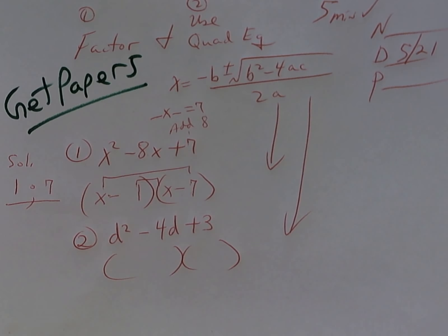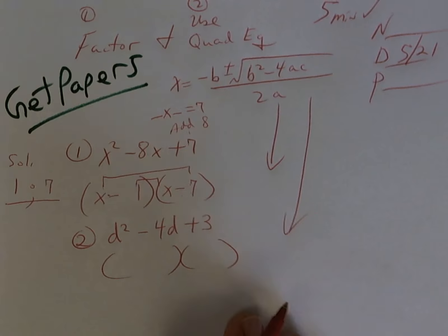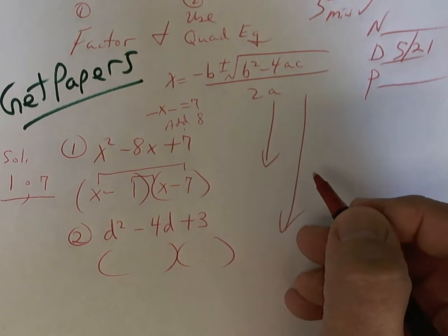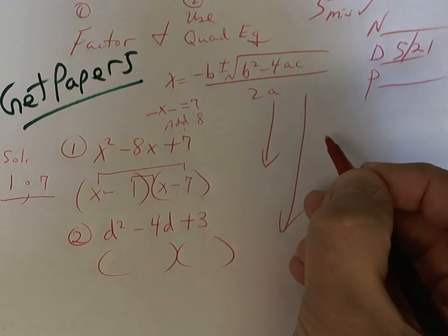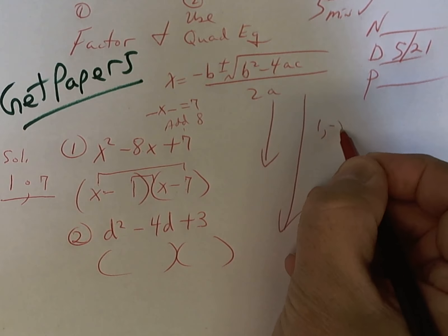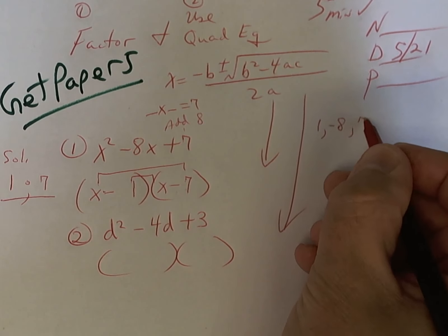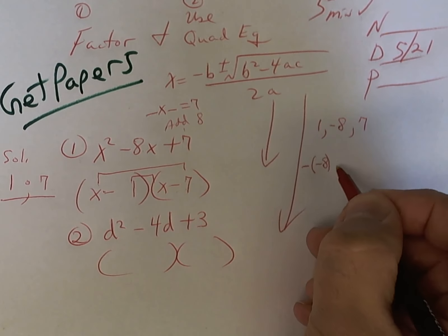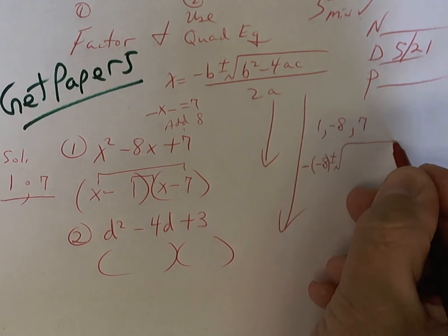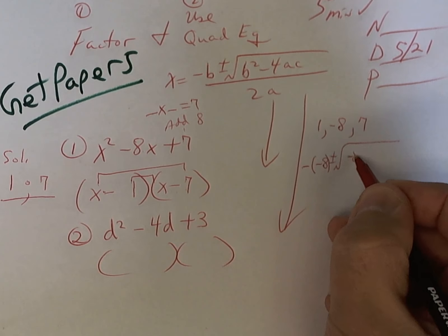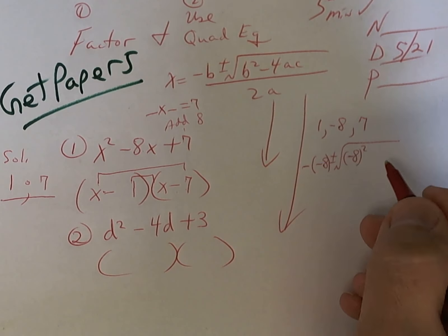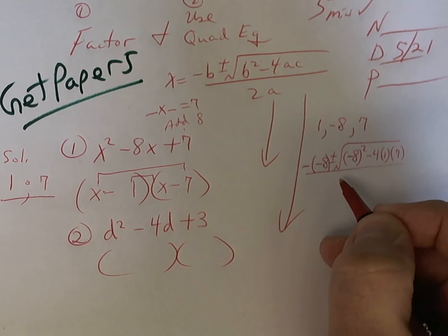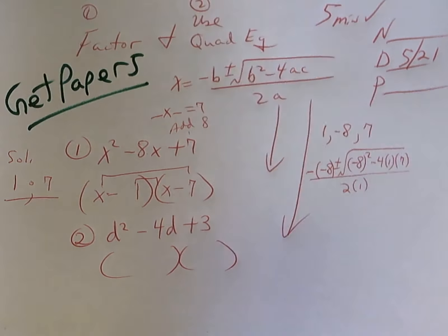Now, the quadratic equation looks like this, a, b, and c. So it's negative b plus or minus the square root of b squared minus four times a times c, all divided by two times a. Any questions so far?